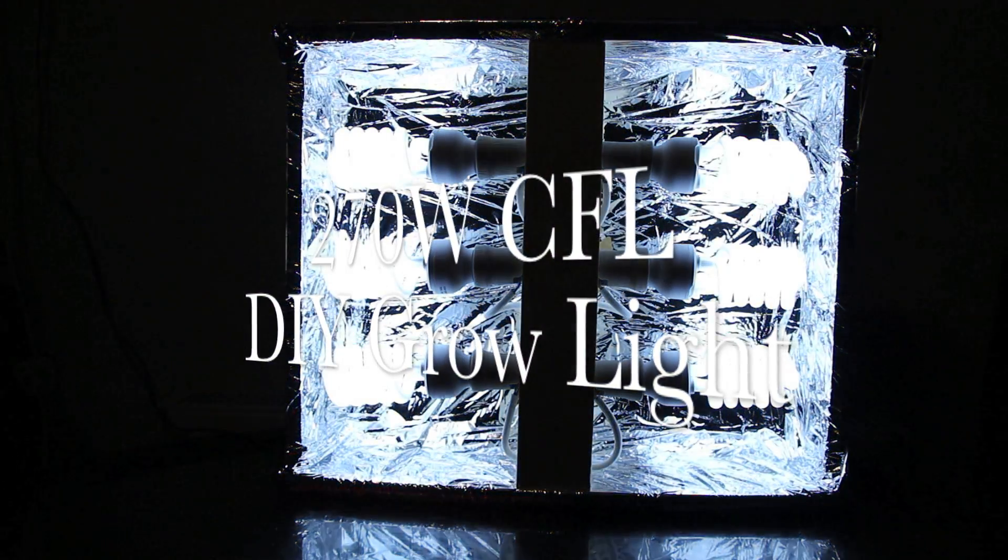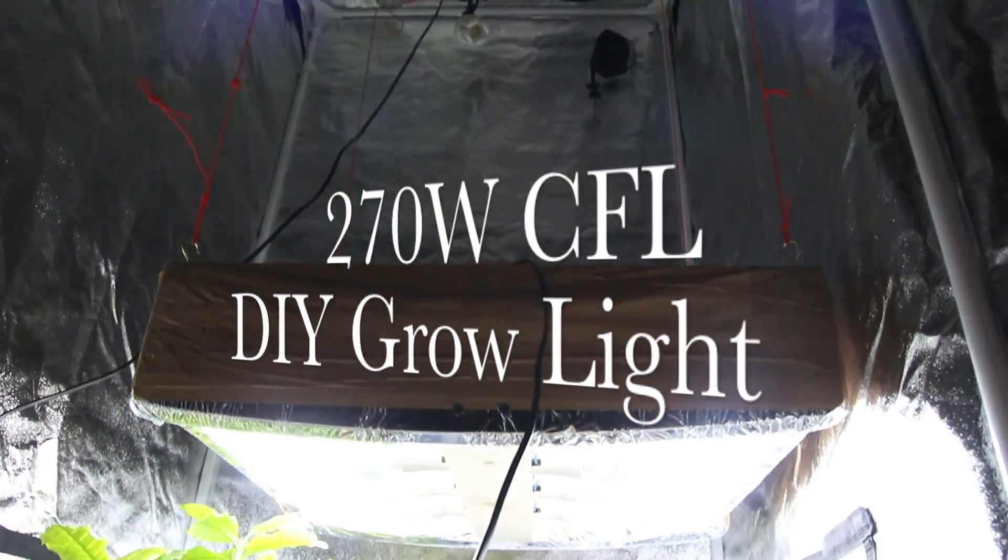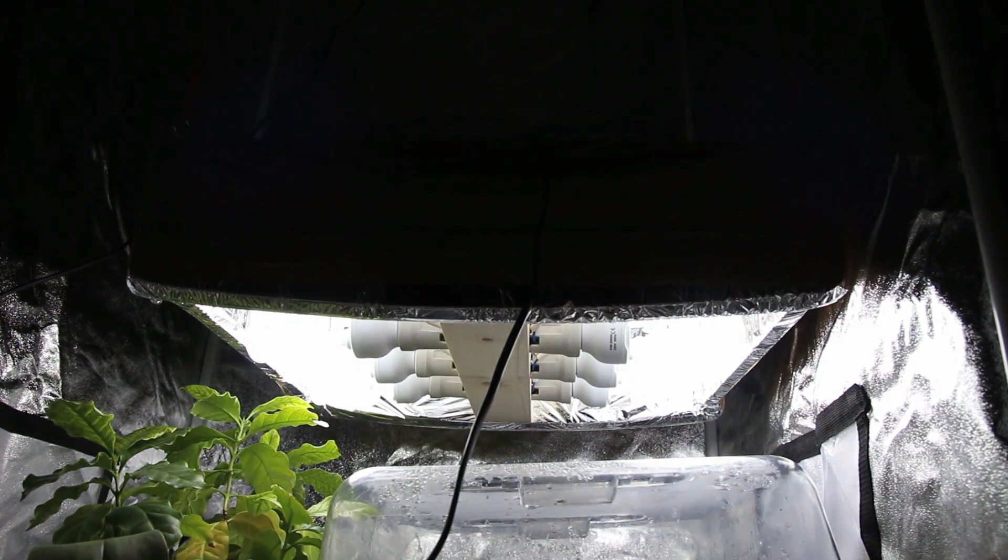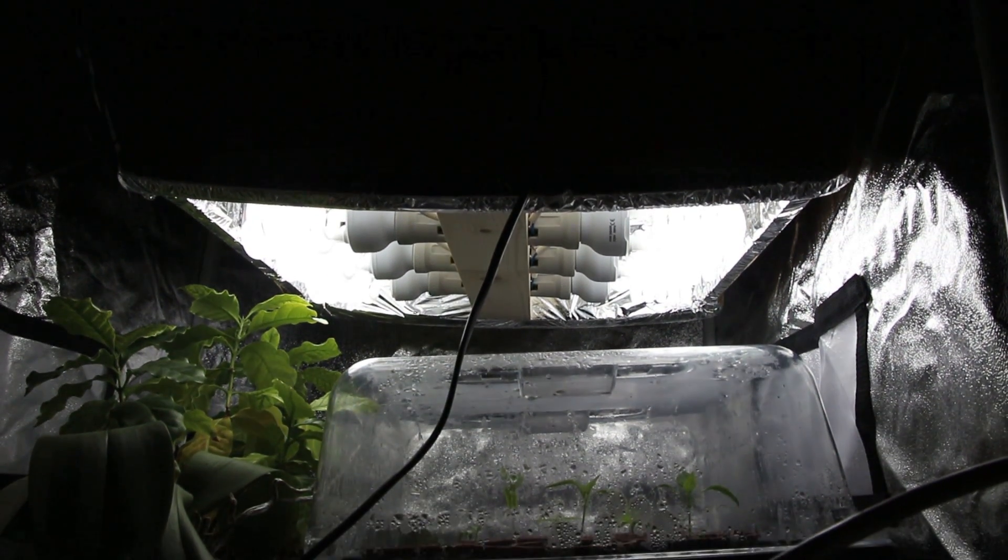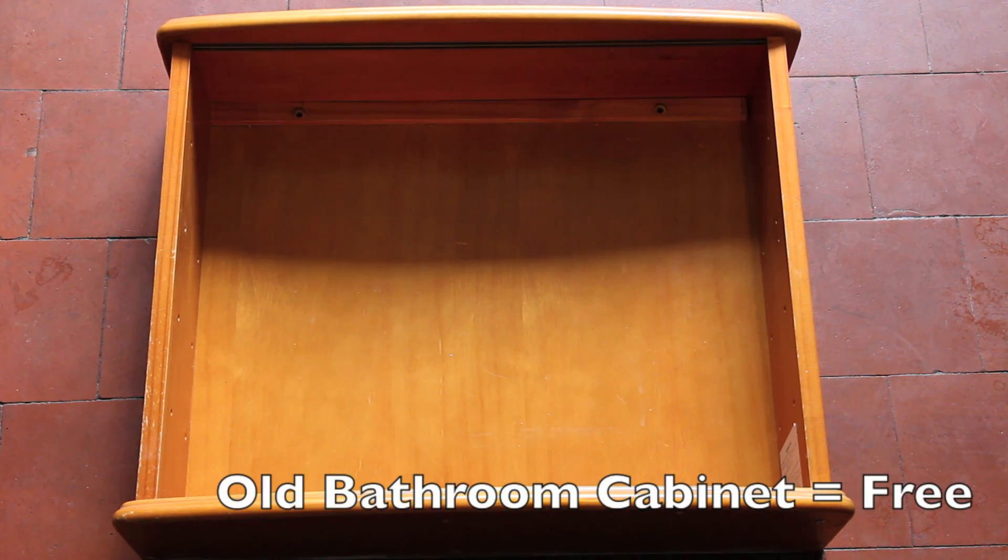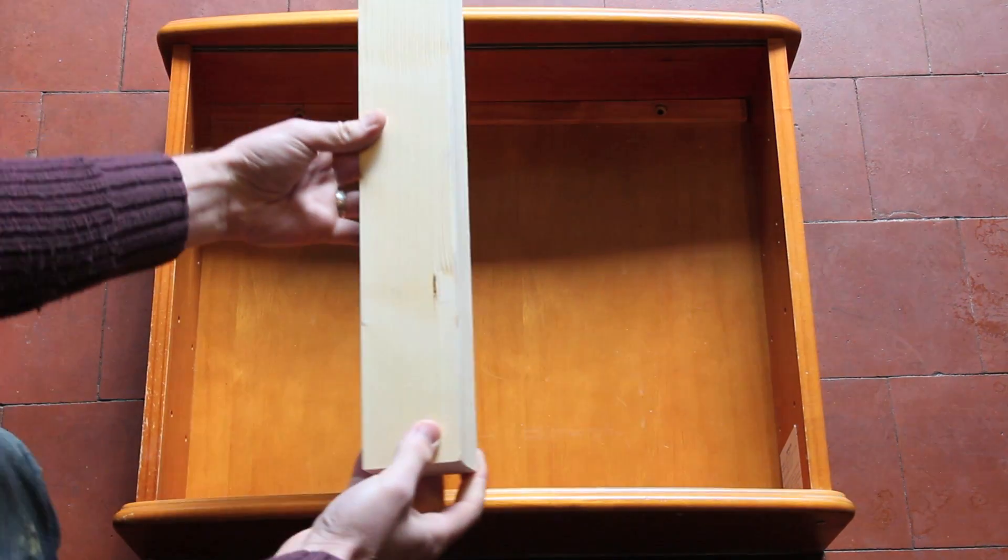Boom, let there be light! 270 watts of compact fluorescent grow lights. Here's a short video on how to make it. I started with an old bathroom cabinet which we're no longer using.